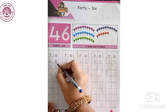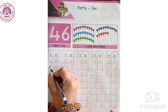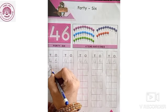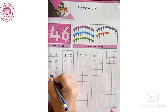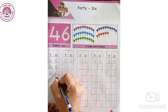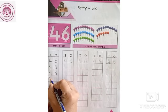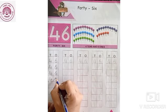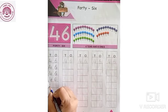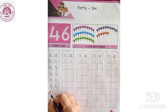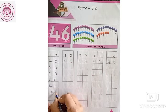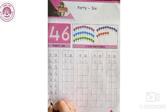So, now we will write 4 in 10's column and 6 in 1's column. 4, 6, 46, 46. 4, 6, 46. 4, 6, 46. 4, 6, 46. Ok.